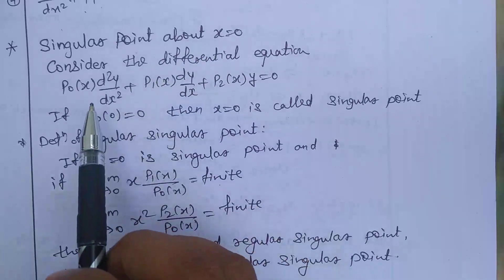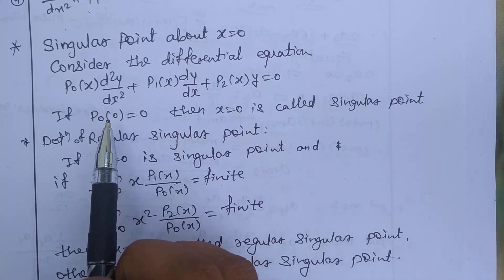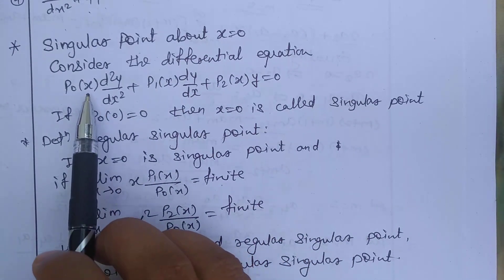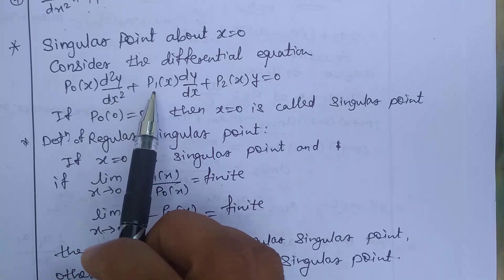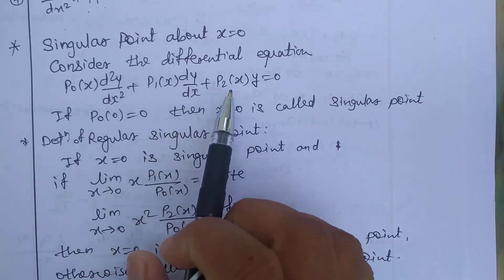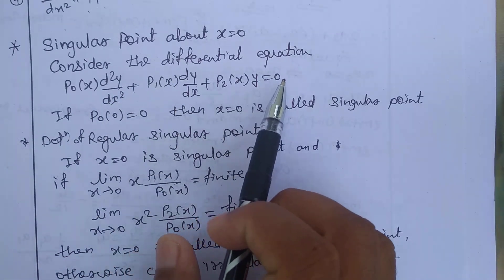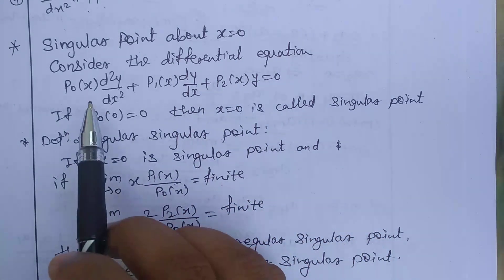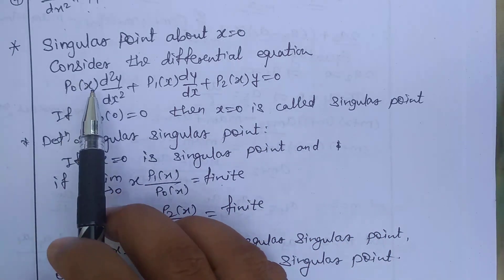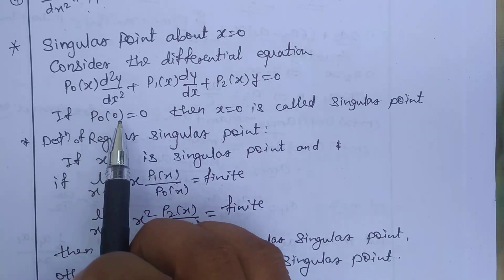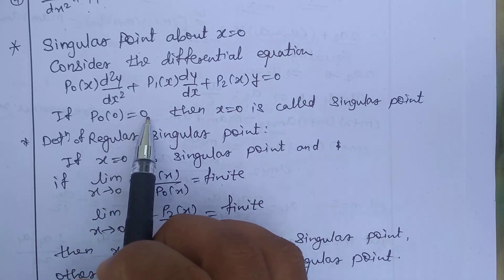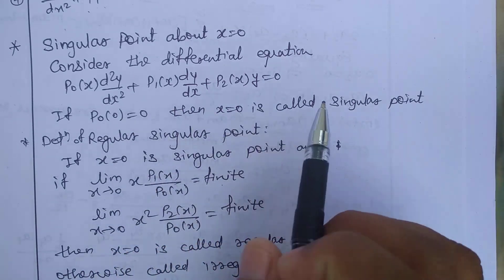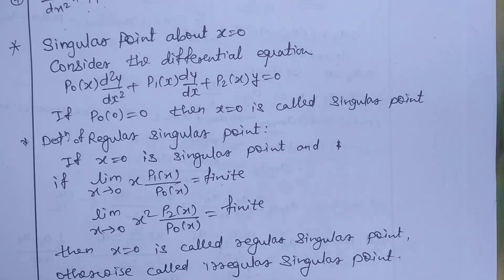Consider the second order differential equation: p₀(x) d²y/dx² + p₁(x) dy/dx + p₂(x)·y = 0. If the value of p₀(0) is equal to zero, then we say that x = 0 is a singular point.